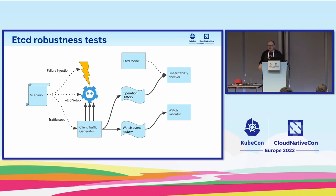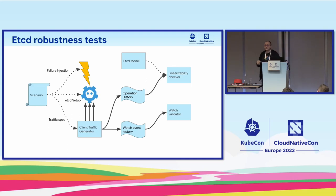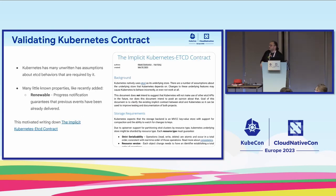This gives us a full solution: the etcd robustness test. It starts the cluster, injects some failures, generates some traffic, then collects the history of both key-value operations — puts and gets — and watch history. The operations combined with the model are passed to the linearizability checker, which tells us whether it's correct or not. Watch history is simpler because it's already ordered; we can write simple functions to validate it.